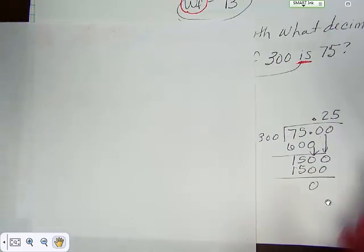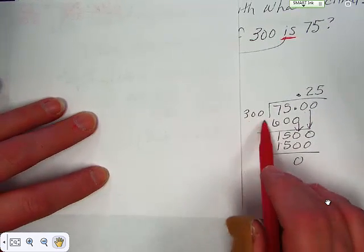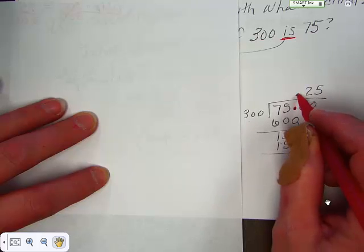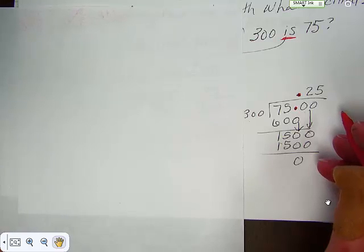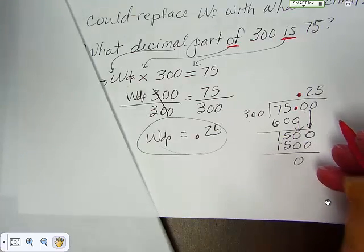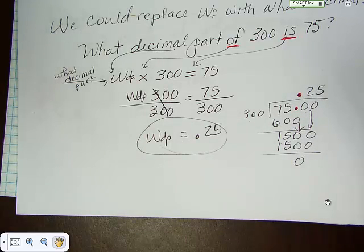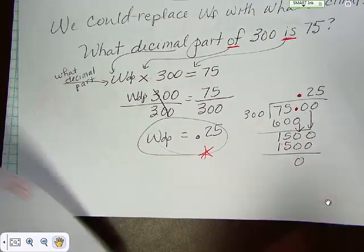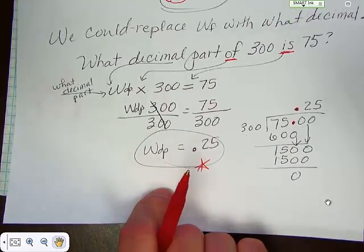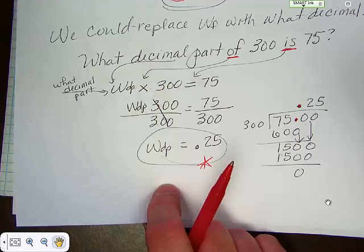75 divided by 300, notice I had to put in decimal places, and I end up with .25, which as a percent is 25 percent as a decimal, which is what they asked for, what decimal part of 300 is 75. Here's your answer, .25. If they asked for the percent, you would just turn that into a percent by multiplying it by 100, it would be 25 percent.